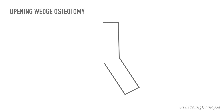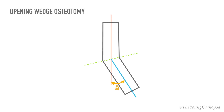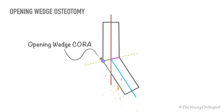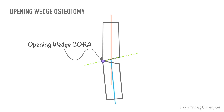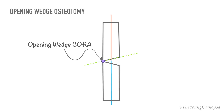The point at which the transverse bisector line intersects the convex cortex is called the opening wedge CORA, and the osteotomy line also passes through this point. The convex cortex remains in contact and there is a wedge-shaped bone defect with its base on the concave side. The final length of the bone is that of the convex cortex. All points on the convex side of the ACA CORA will be compressed, whereas all points on the concave side will be distracted.